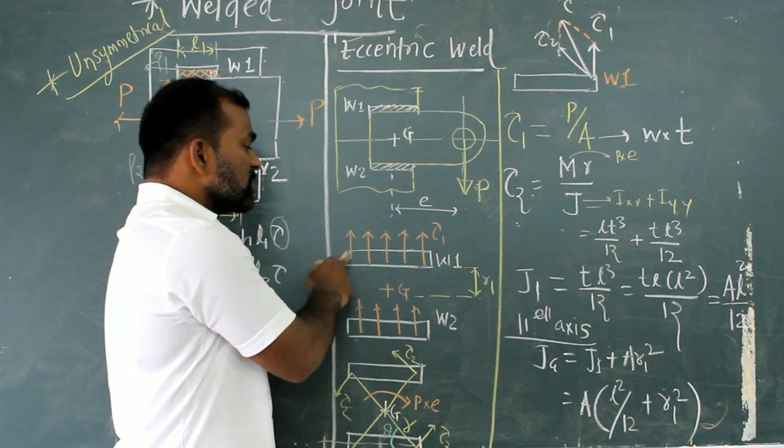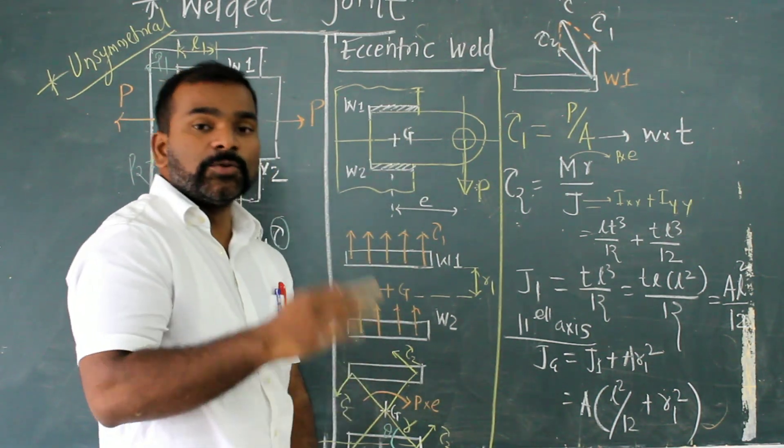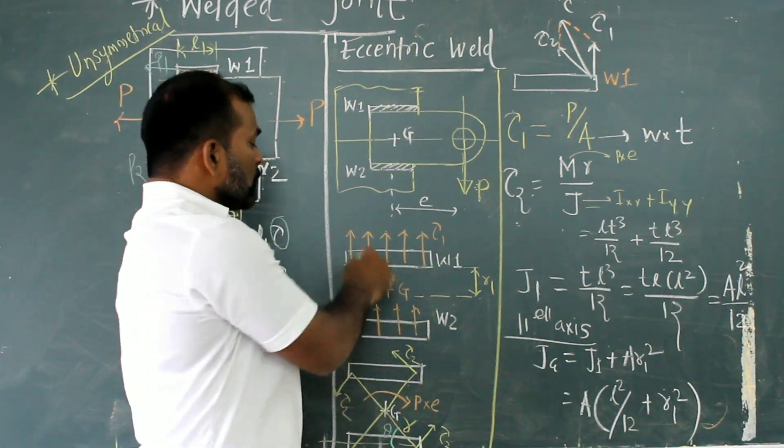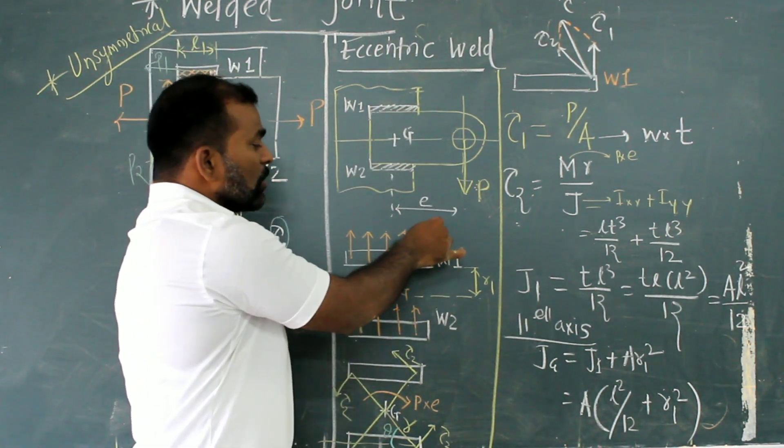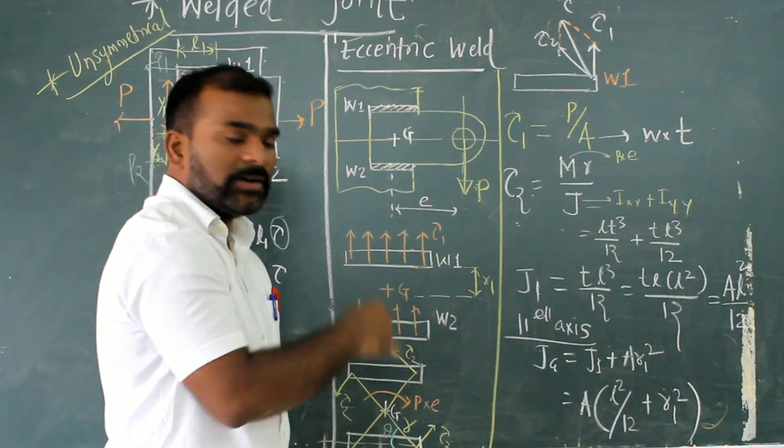In 3D, I can say this is weld 1, weld 2. Now, primary force, as I told you, is a force which is always acting opposite to the direction of the load. So load is acting opposite. This is called primary force, tau 1, that is primary shear stress in the weld.